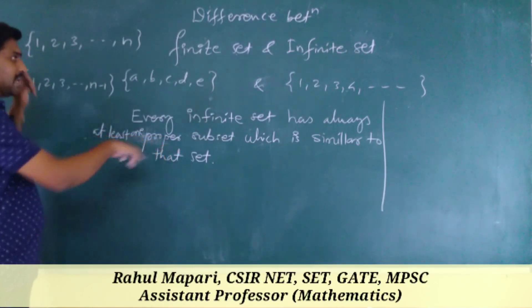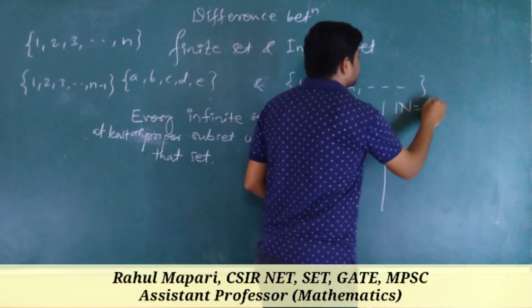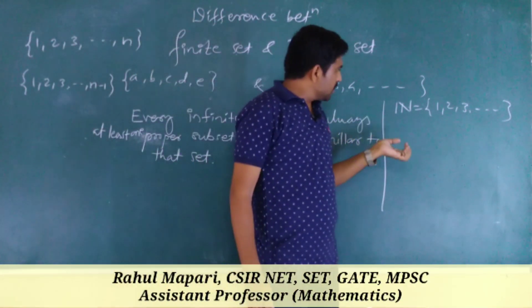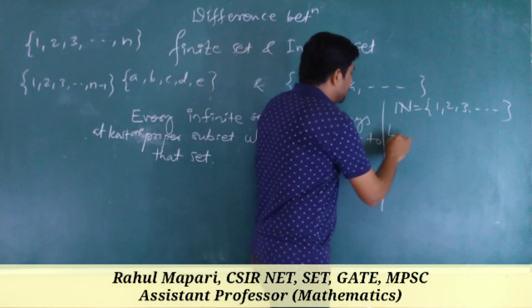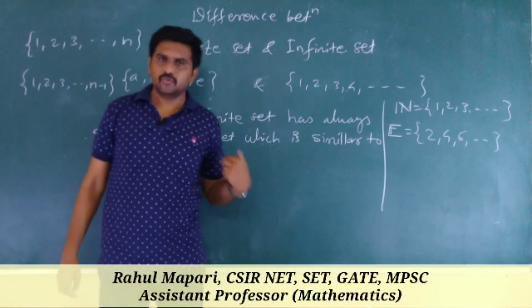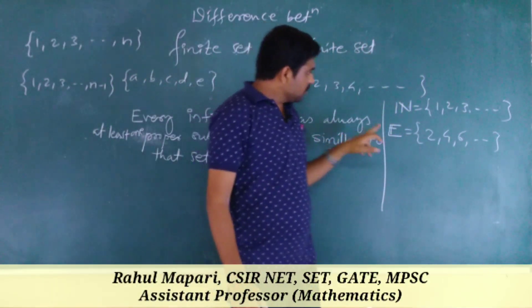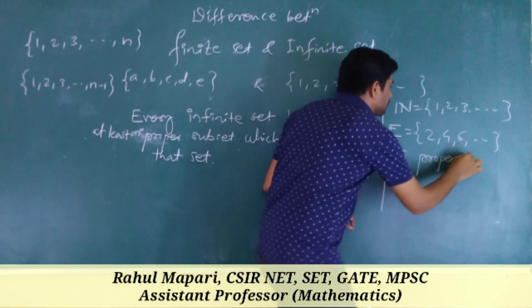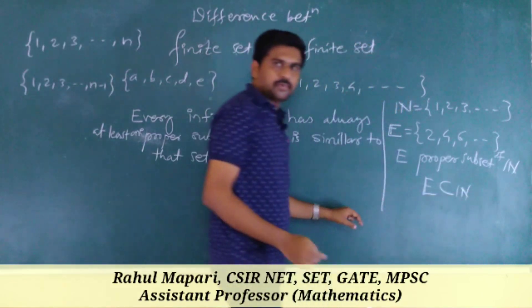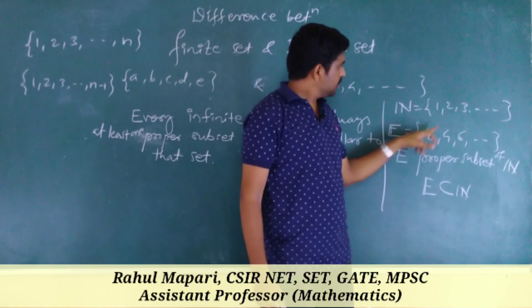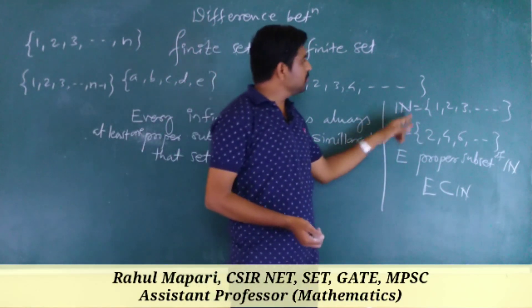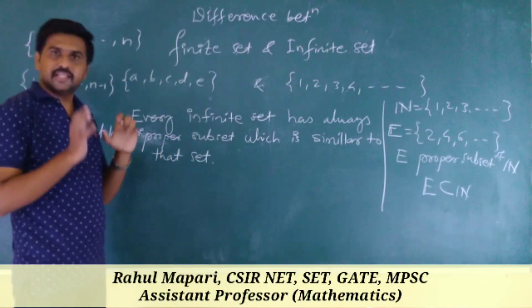In the infinite case, this does happen. Suppose we take the set of natural numbers {1, 2, 3, ...}. I define a set E = {2, 4, 6, 8, 10, ...} — the even numbers. Now E is a proper subset of the set of natural numbers, because there are elements in N that are not in E, such as the odd numbers. Now, how can we say E is similar to N?